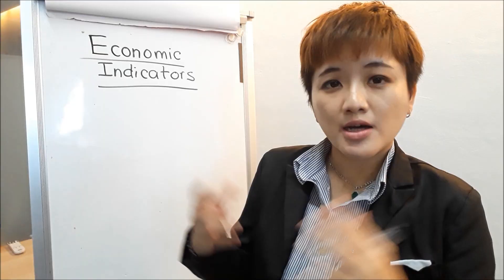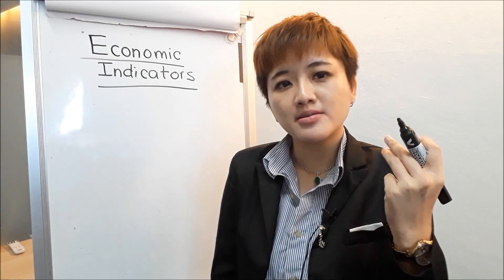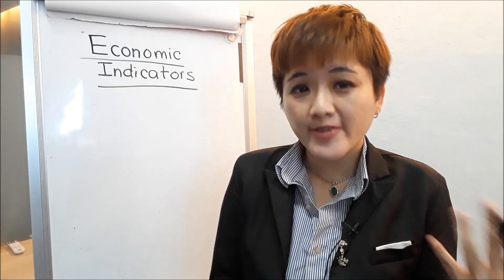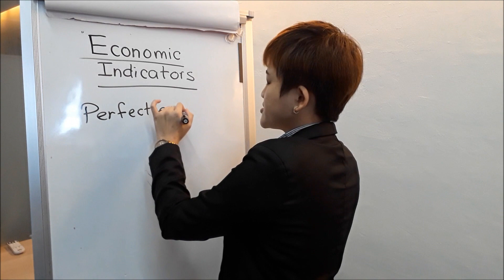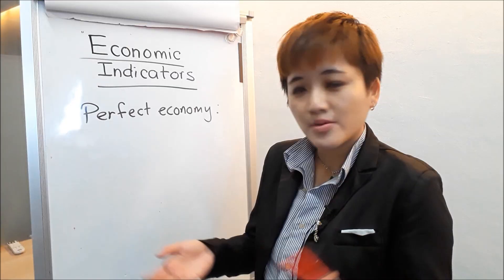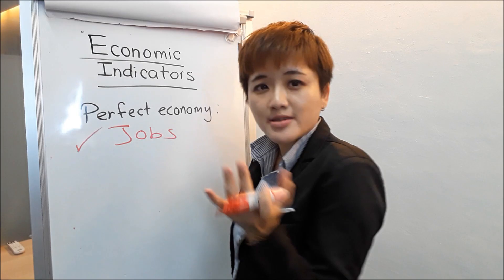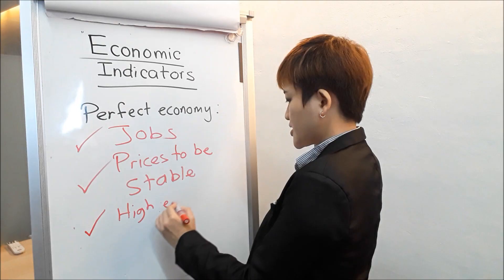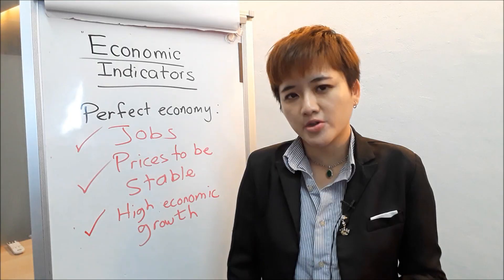There are a lot of economic indicators out there — some are very important, some are completely useless. You need to go back to the three main macroeconomic themes: productivity and economic growth, inflation, and employment. First, you need to understand what a perfect economy is like. Everybody wants a perfect economy — you, central banks, politicians. In a perfect economy, everybody has jobs, prices are stable without too much fluctuation, and people want high economic growth because it's good for businesses and for employees.